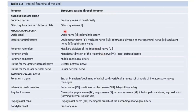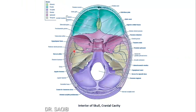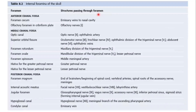First, we will see the internal foramina of the skull. This is the cranial cavity — anterior cranial fossa, middle, and the posterior cranial fossa. The anterior cranial fossa contains a foramen cecum and the olfactory foramen. The foramen cecum passes emissary veins to the nasal cavity.